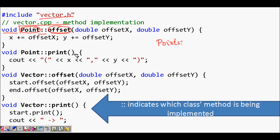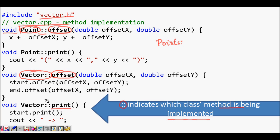Because the function name 'offset' is the same for both the Vector class and the Point class, the scope resolution operator differentiates them. Point::offset means we are implementing offset for the Point class, and Vector::offset means we are implementing it for the Vector class. So vector.cpp implements the member functions — offset and print — for both the Point class and the Vector class.